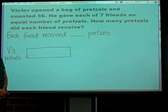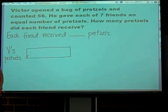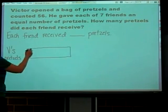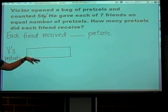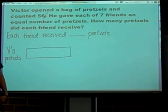Now we are ready to go back and do what? We're not chunking. Okay, so Victor opened a bag of pretzels and counted 56. Let's stop. What in there would be information that we're going to need to include in our model?